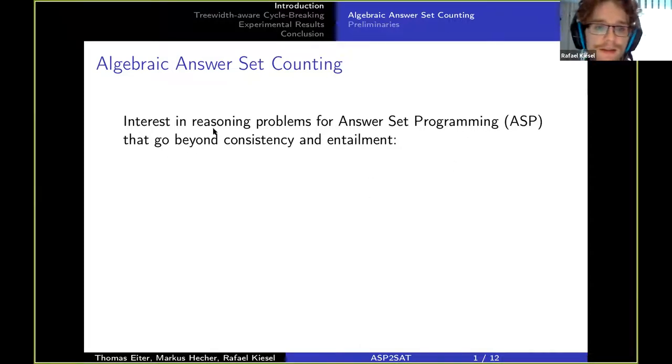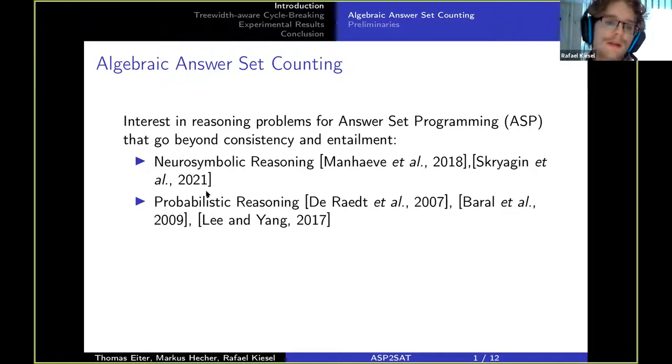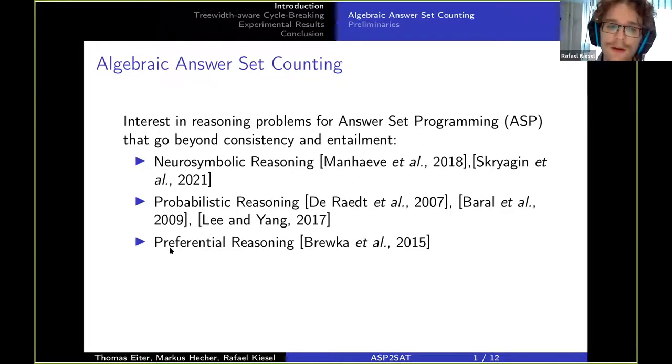Well that's because for answer set programming, especially recently, people didn't care only about consistency and entailment but a lot more. One big example here is neurosymbolic reasoning like with Deep ProbLog or the very recently published SLASH. Then in a less general sense, probabilistic reasoning in multiple fashions with ProbLog, LPMLN, and PLOG or something like that.